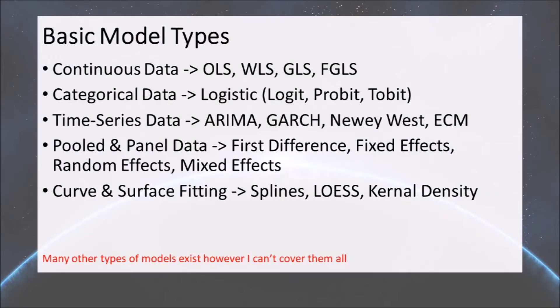Today we're covering a few of the most popular model types and the overview of how you select that model structure. In later videos we'll cover variable selection, model fitting, and other criteria. In my opinion there are five types of data that help determine the best model: continuous data, categorical data, time series data, pooled and panel data, and curve fitting and surface fitting. Next to each data type you can see suggestions of models. As a disclaimer, many other types of models exist — this is just a general selection of popular ones.